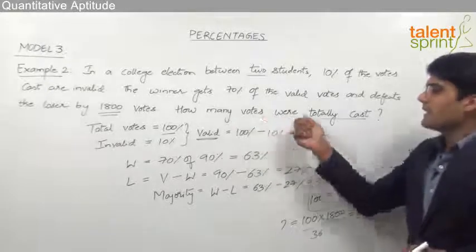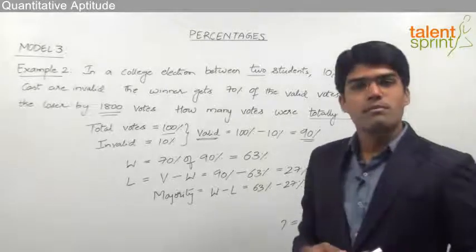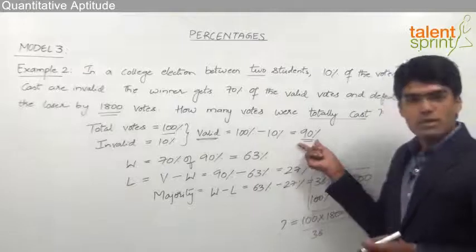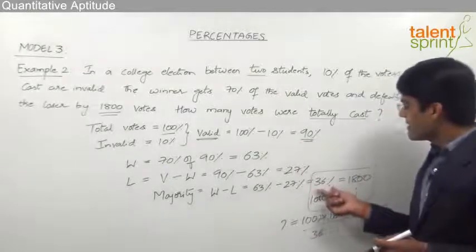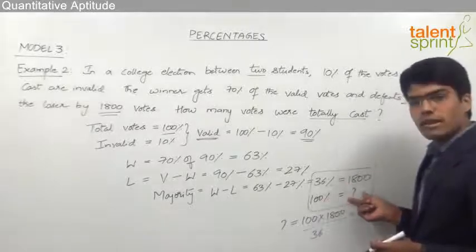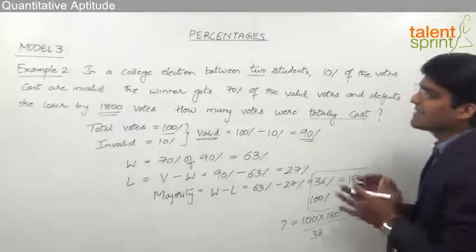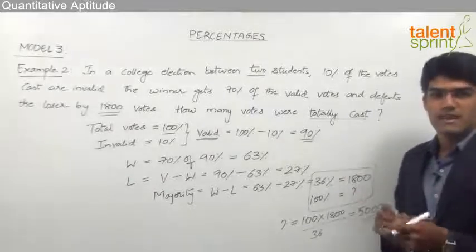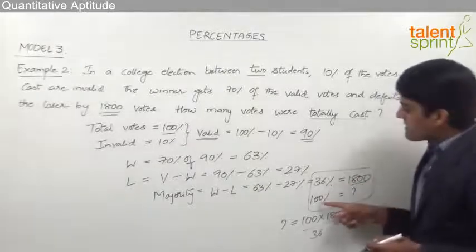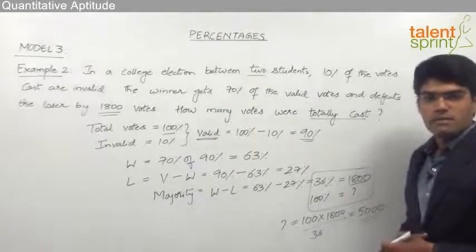Similarly, instead of asking for total votes cast, the question could ask for the total number of valid votes. We know valid votes are 90% and 36% is equivalent to 1800. So 90% will equal 90 × 1800 ÷ 36. By cross multiplication we get the desired answer. This is how you solve election questions — by finding what percentage equivalent is given and what has to be calculated.